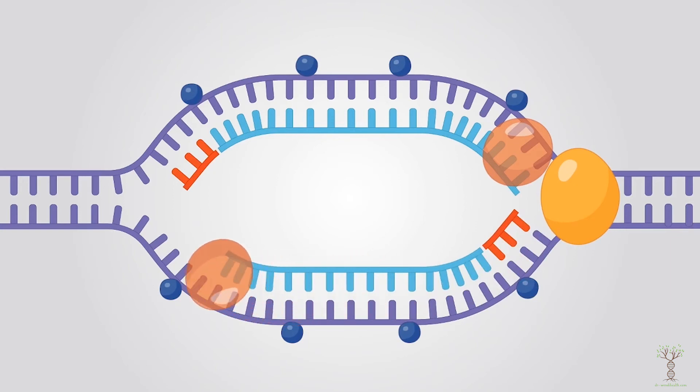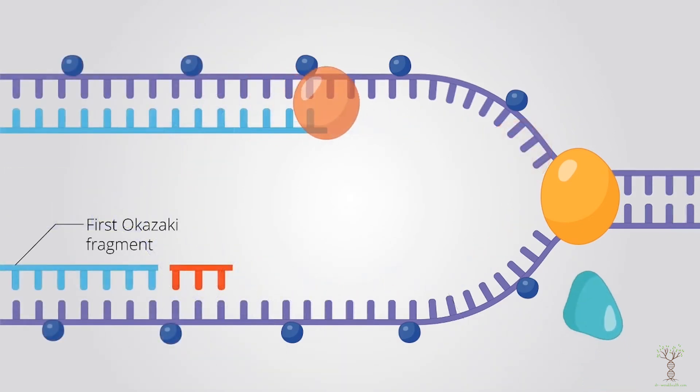But it's moving in the opposite direction of the helicase. As the replication fork continues to progress, new primers need to be continually added to the lagging strand.